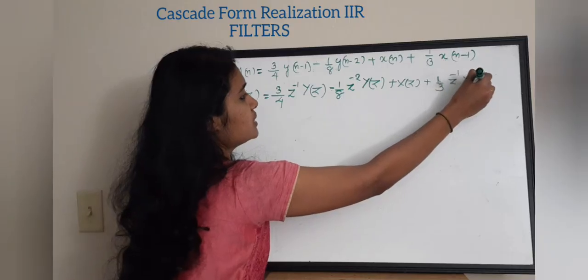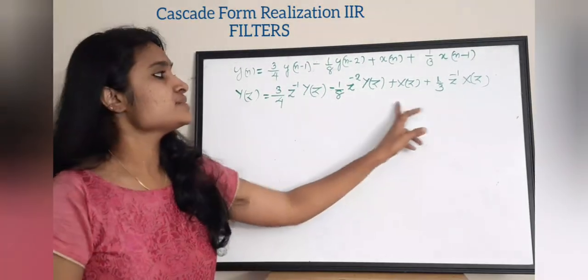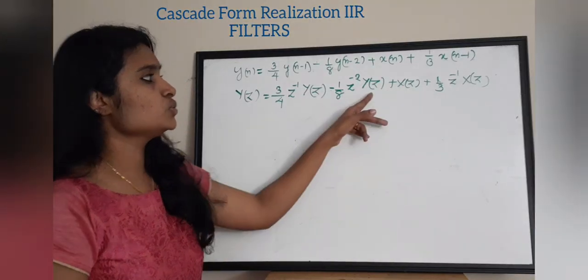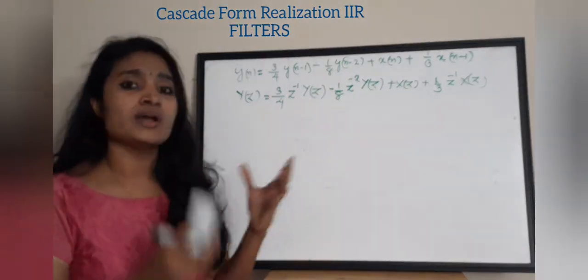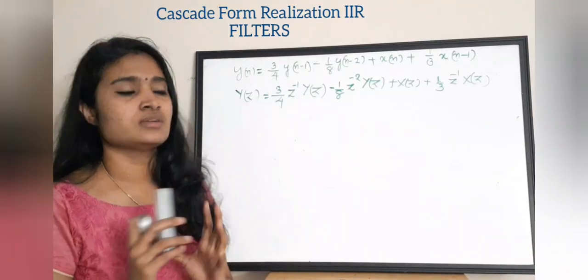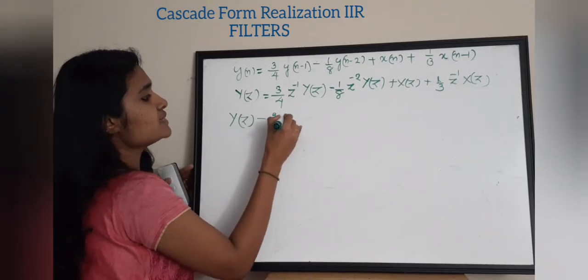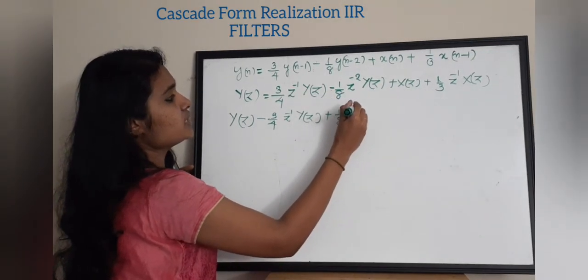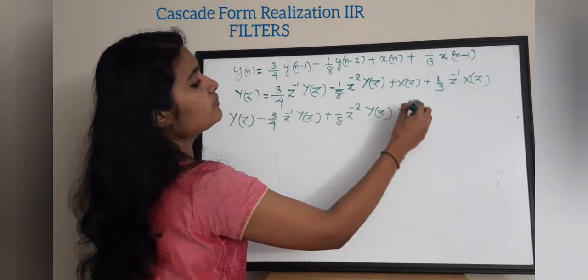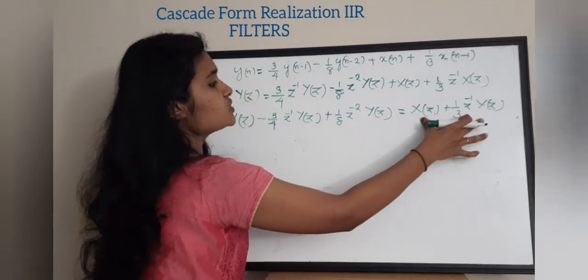Plus X(n), whose Z-transform is X(z), plus 1/3 times X(n−1), whose Z-transform is z⁻¹ · X(z). Now bring the terms with Y(z) to one side and keep the X(z) terms on the other side. Why we are doing this is that we need to form a Y(z)/X(z) format — that is, we need to find a transfer function equal to Y(z)/X(z). So: Y(z) − 3/4 z⁻¹ Y(z) + 1/8 z⁻² Y(z) = X(z) + 1/3 z⁻¹ X(z).